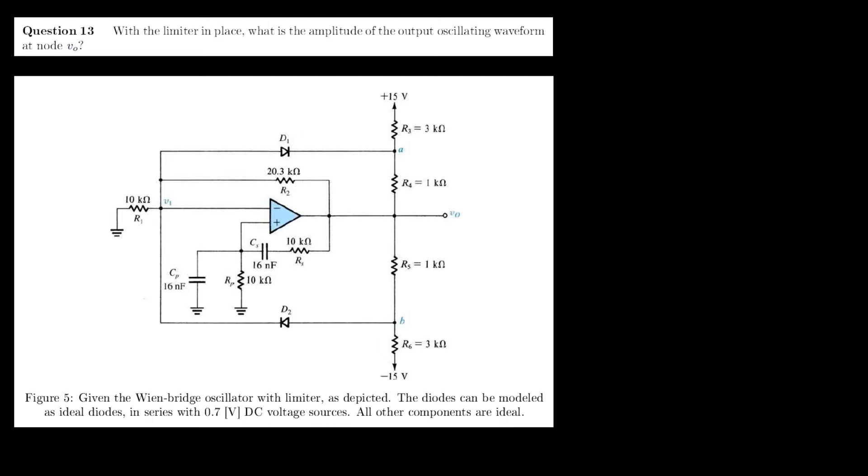To solve this question, we should set up three equations. The first equation is a nodal current equation at node VA. We assume that the diode is not turned on yet.